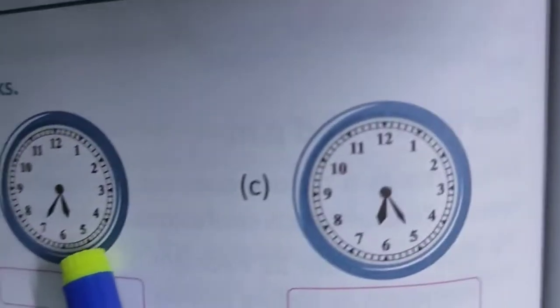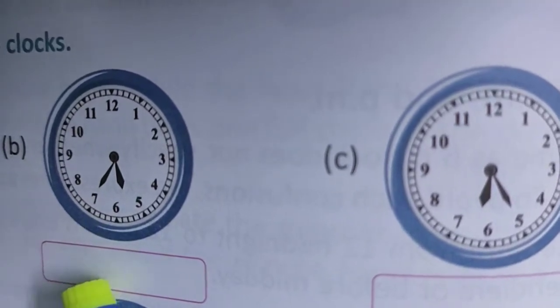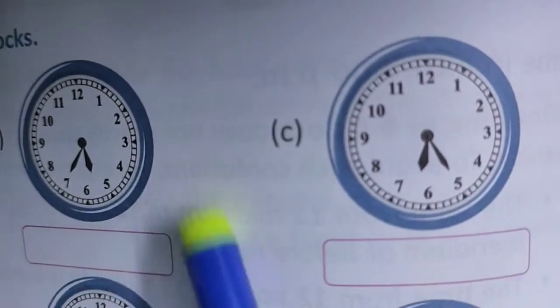Come here, 5 past 5, 7 is here, 7 into 5, 35. 5:35 minutes. 5 hours, 35 minutes. In this way, you complete number 1.